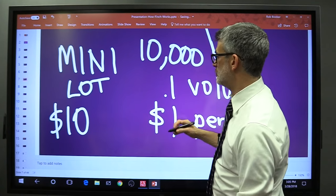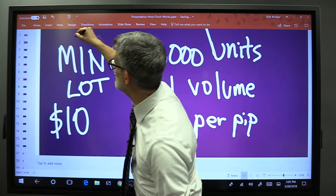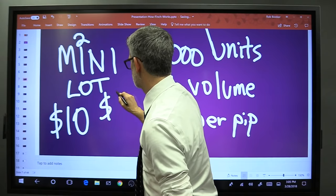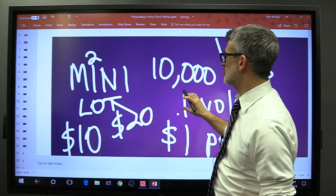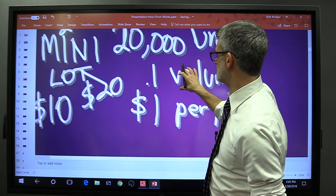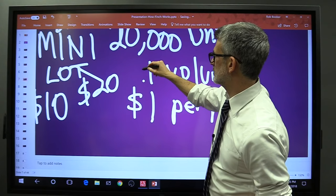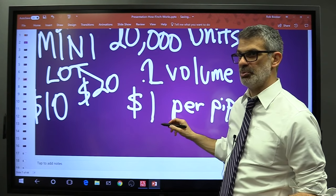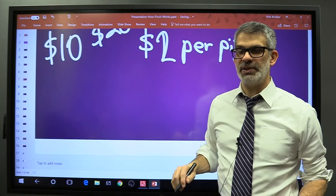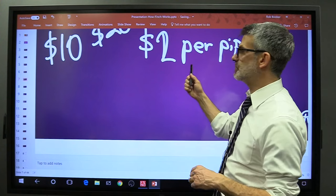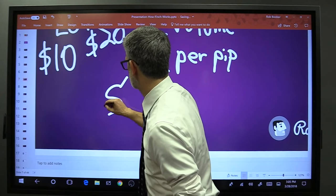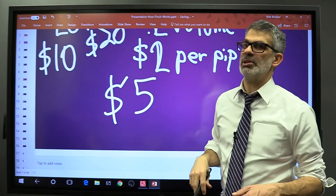What if you made 10 pips but you traded two mini lots? $20. That's 20,000 units of currency. The volume number would be 0.2, and the dollar value per pip would be $2. If you traded five mini lots, your value per pip would be $5. The mini lot is one of the most commonly traded units.